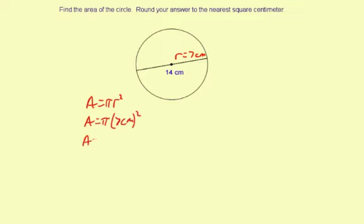So area equals, now 7 centimeters squared, that's 49 square centimeters. So it's going to be pi times 49 centimeters squared.